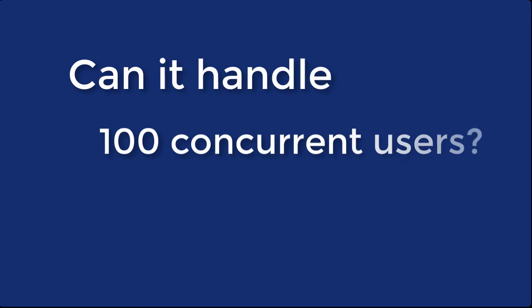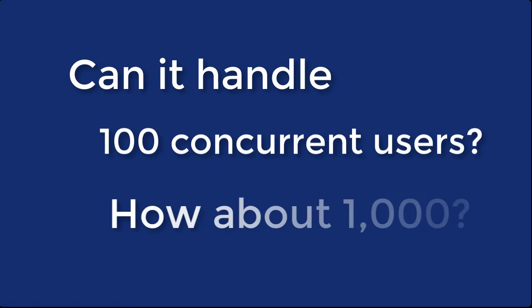For instance, if you know that, given certain conditions, your system can only handle 1000 users downloading and uploading files at the same time, then you can limit the number of concurrent users to a number wherein acceptable or even optimal performance is assured.